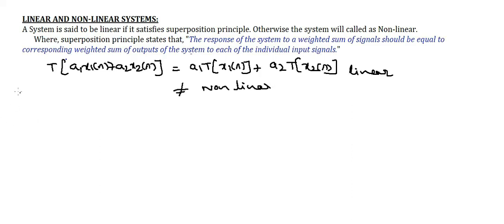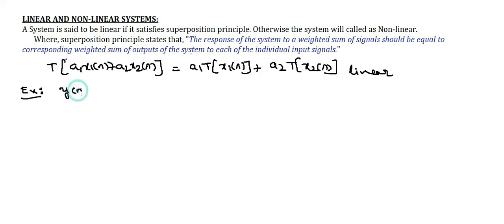To verify whether a given system is linear or not, I am giving one example. A system is represented with its response y(n) = n·x(n). That is the system response I have taken, where x(n) is the input and y(n) is the response of that system.